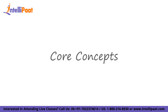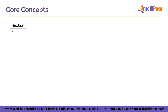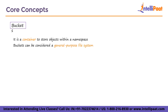Let us move on to the core concepts of S3. First, we have buckets. A bucket is a container to store objects within a namespace. The namespace refers to the name of the bucket, which must be globally unique — so if I have a bucket named 'demo bucket,' nobody else can name their bucket 'demo bucket.' Buckets can be considered as a general-purpose file system. The bucket itself acts as a root-level directory, and you can have multiple subdirectories under it where you can store objects at different levels.